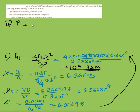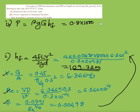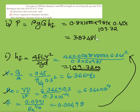Power required is P = ρgQ × HF. Here, ρ = specific gravity × 1000 = 0.8 × 1000 = 800 kg/m³, g = 9.81, Q = 0.45, and HF = 109.72. Substituting these values gives P = 387.48 kW.